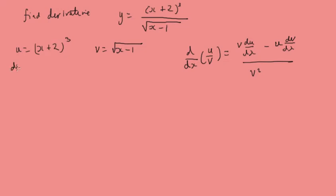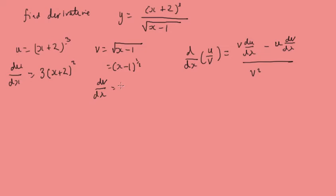Let's find du/dx: we bring the 3 down and the derivative of the inside is just 1, so du/dx equals 3 times x plus 2 squared. For dv/dx, we rewrite v as x minus 1 to the power of a half, so the half comes down and dv/dx equals one half times x minus 1 to the minus one half.